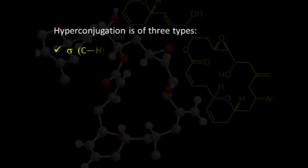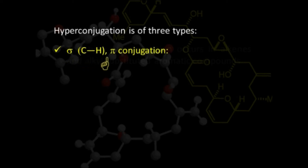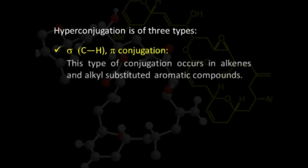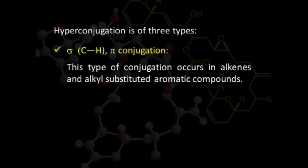Hyperconjugation is of three types. The common requirement in all three types is the presence of a sigma bond. Apart from that, there should be a pi bond on an adjacent carbon atom, so this type is often called sigma-pi conjugation. This happens in the case of alkenes and alkyl-substituted aromatic compounds.